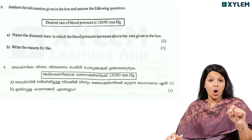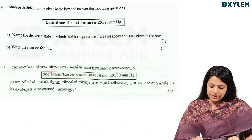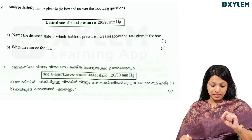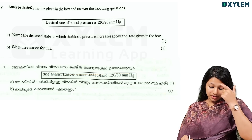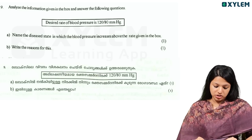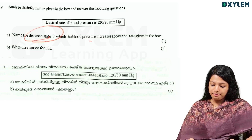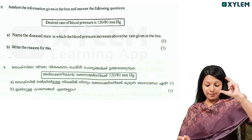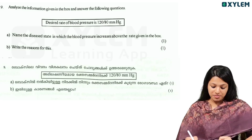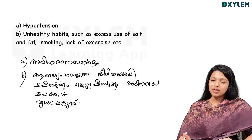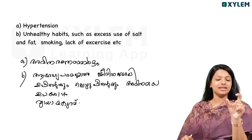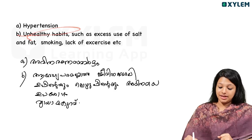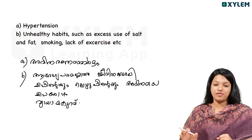Analyze the information given in the box and answer the question. The normal rate of blood pressure is 120/80 mmHg. Name the disease state in which blood pressure increases above this rate and write the reason. The answer is Hypertension. Causes include unhealthy habits, excessive use of salt and fat, smoking, and lack of exercise.